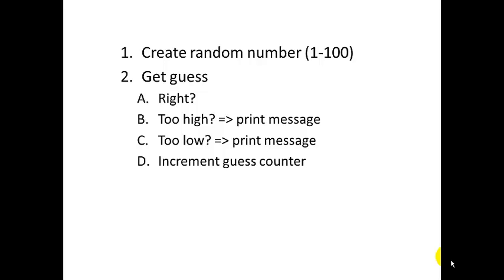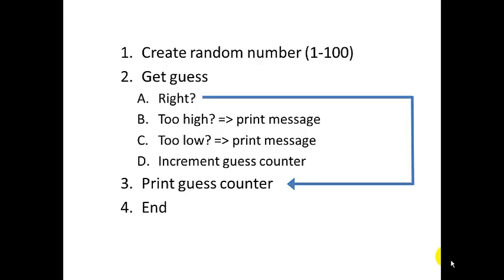Is it too high? And if it is then we'll print a message hey it's too high. If it's too low we need to print a message your guess is too low. And then each time the user makes a guess we want to increment our guess counter because we need to keep track of how many guesses they're making. And then at the end of the program we'll print the guess counter and end. So if it's right we're going to go straight to printing the guess counter. If he's wrong we're going to increment the guess counter and then get another guess.